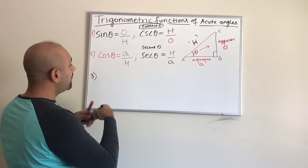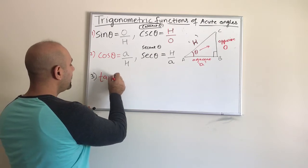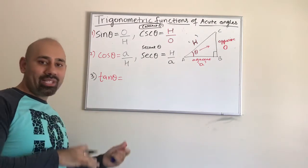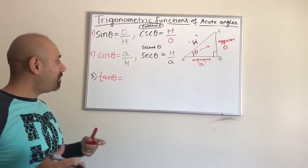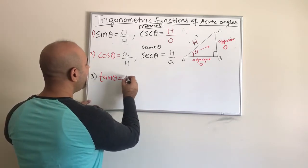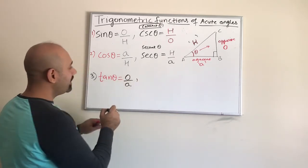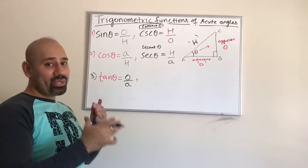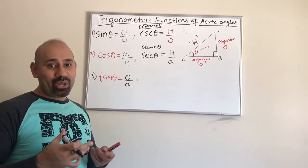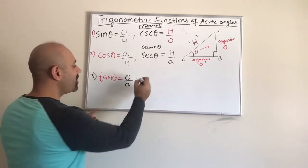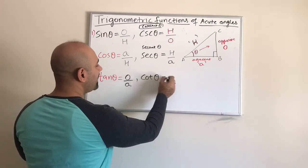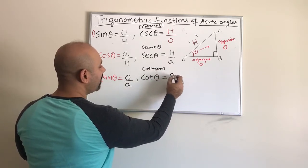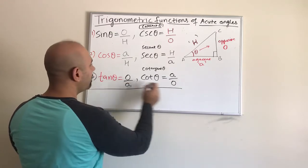The third one is called the tangent of theta, which is a very important function with connections to algebra, calculus, and many other applications. Tangent is defined as the opposite over the adjacent. The reciprocal of tangent — adjacent over opposite — is called the cotangent, written as cot theta but read as cotangent of theta. So these are the six trig functions.